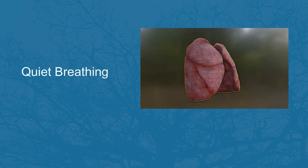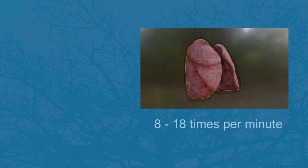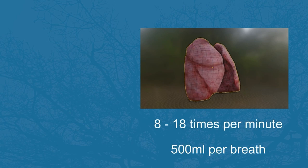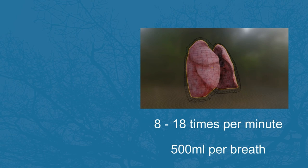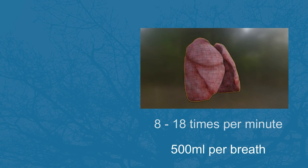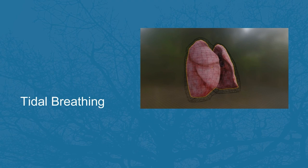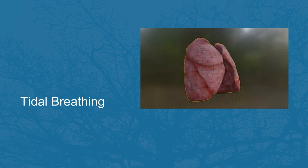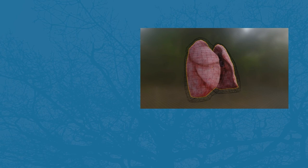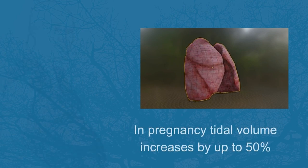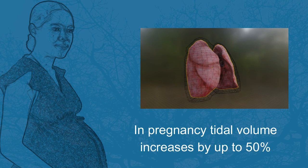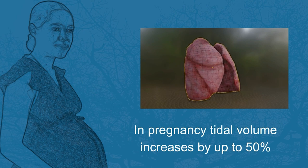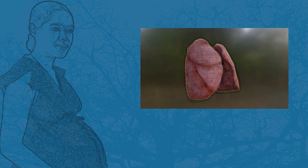When we're relaxed, adults breathe in and out approximately 8 to 18 times per minute and each breath contains about 500 millilitres of air. This is also known as tidal breathing. Sometimes the tidal volume needs to increase, for example, if we exercise. In pregnancy, the tidal volume increases by up to 50% because growing a baby needs more oxygen breathed in and more carbon dioxide is made that needs to be breathed out. This mechanical act of the air being drawn in and out of the lungs is ventilation.